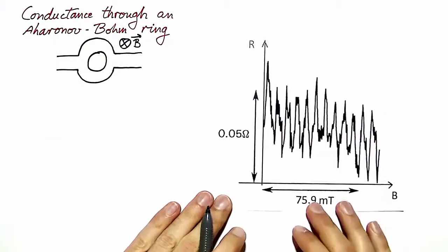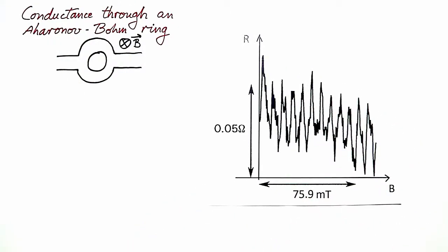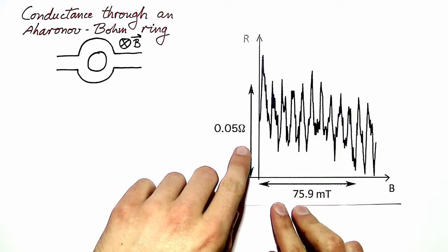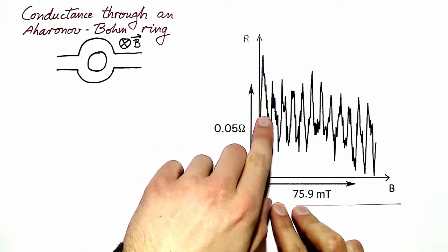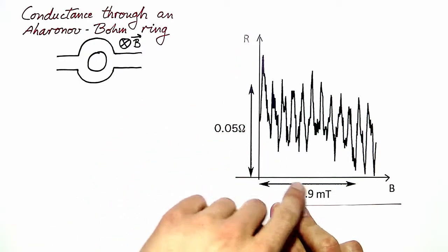The data is shown in this graph here, where you can see that the resistance shows visible periodic oscillations as a function of magnetic field.